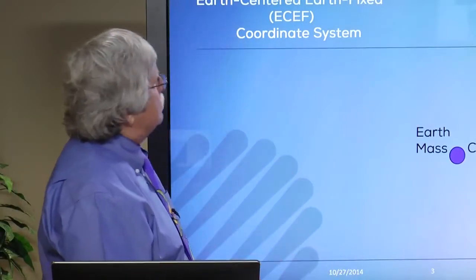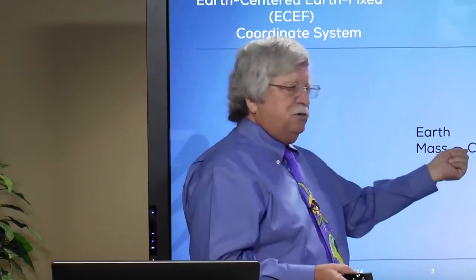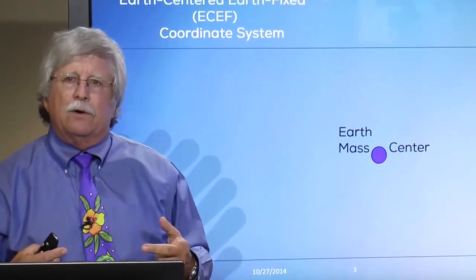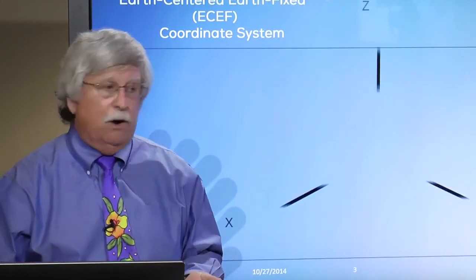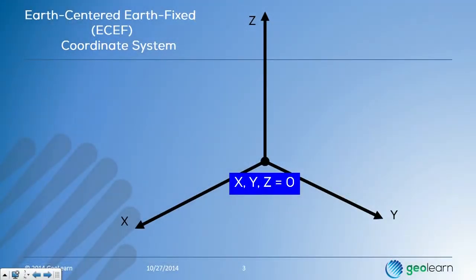Let's take a couple of minutes to describe what ECEF really is. Let's imagine that we're standing at Earth's geocenter, because the satellites orbit about Earth's geocenter — Earth's mass center. That's the origin of our coordinates; that's where all of our coordinates equal zero: x, y, and z. So we have a three-dimensional coordinate system defined with its zero point at Earth's geocenter, x, y, and z.